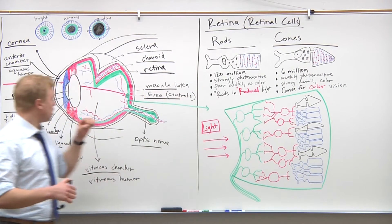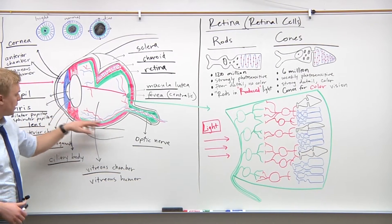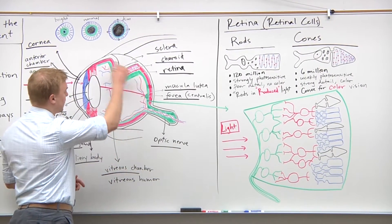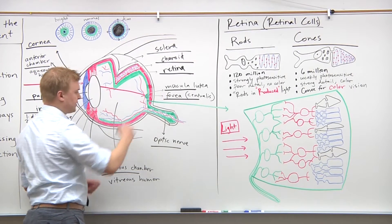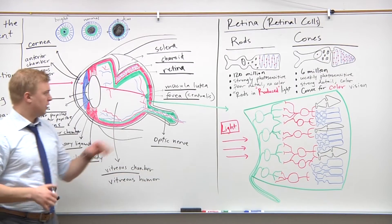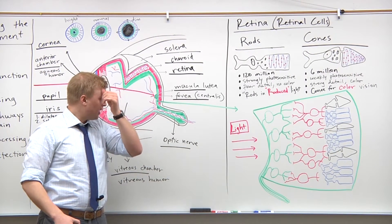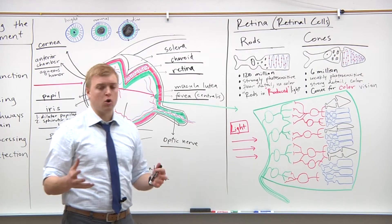The rods are going to be more concentrated on the periphery of the retina here, anywhere in this area right here on the outside. Whereas the cones are going to be much more centered in the center of the retina, in particular here at the macula lutea, which we mentioned earlier, which has almost all cones.